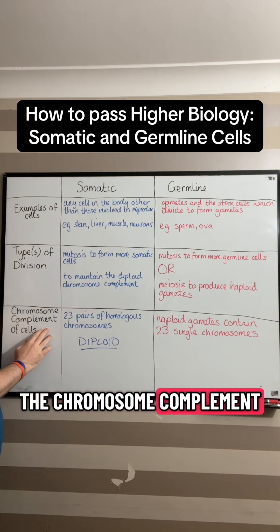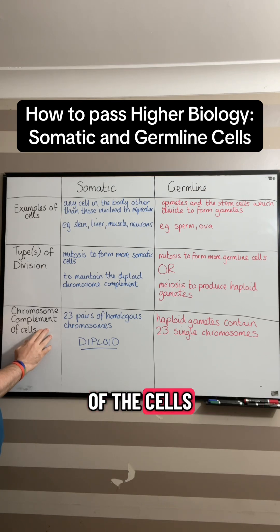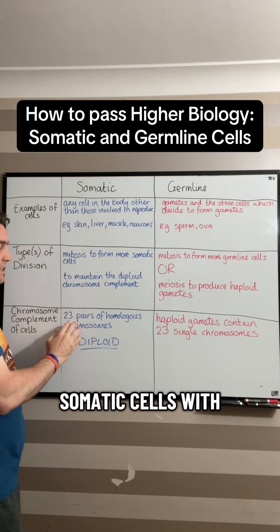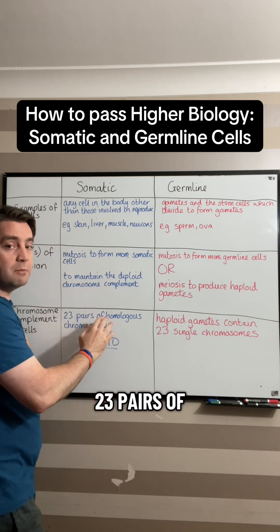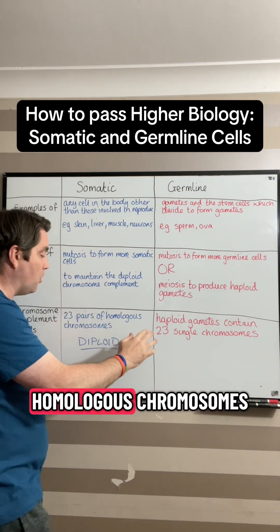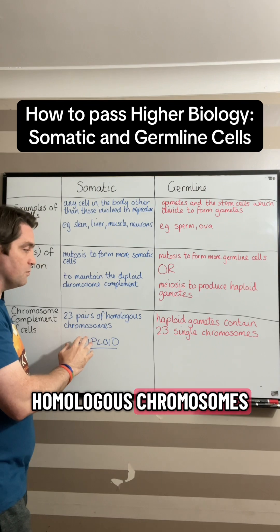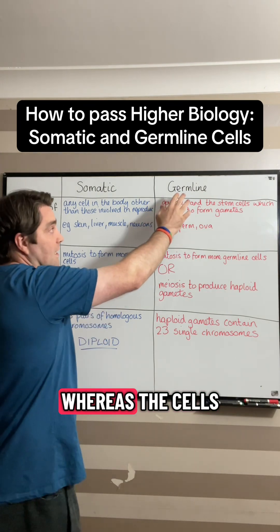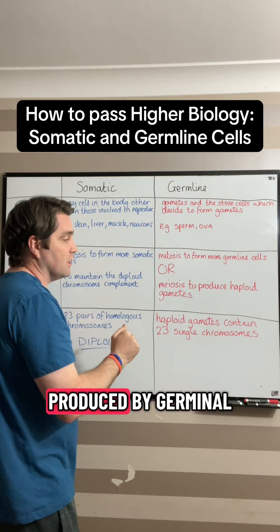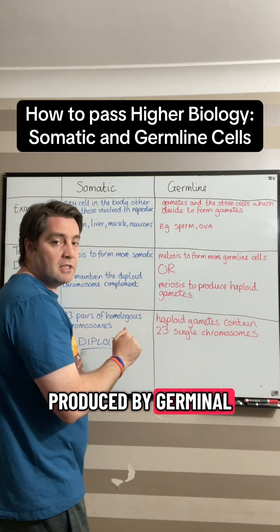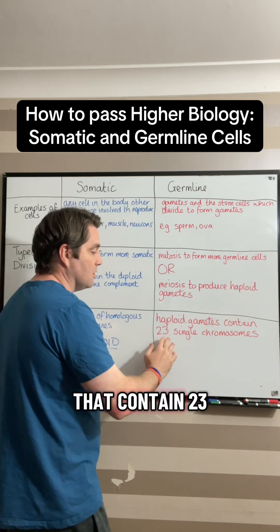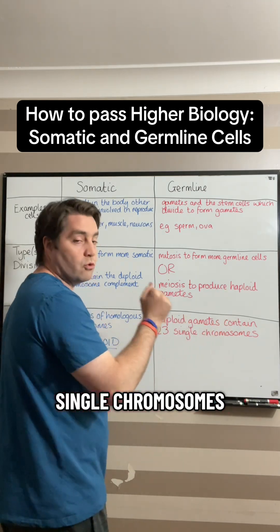In terms of the chromosome complement, somatic cells produce somatic cells with 23 pairs of homologous chromosomes — they are diploid — whereas the cells produced by germline are haploid gametes that contain 23 single chromosomes.